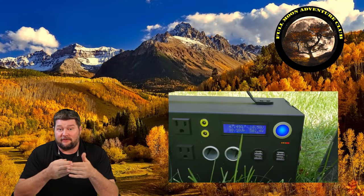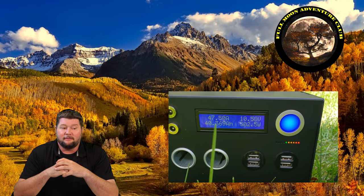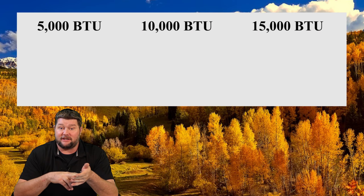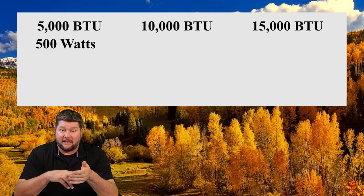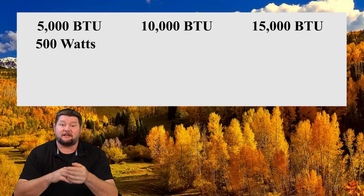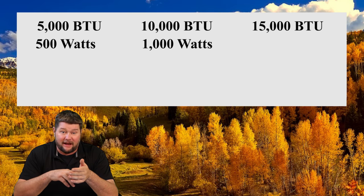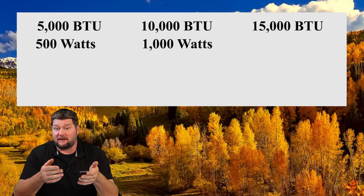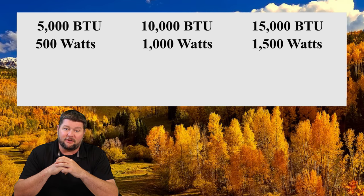I've tested all three of them over the last three days, and that's why this video occurred to me. It's pretty consistent. First, we'll do the wattage. A 5,000 BTU little window AC unit is going to use 500 watts, and a 10,000 BTU window unit is going to use 1,000 watts, and a 15,000 BTU RV air conditioner is going to use about 1,500 watts.